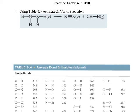This is a practice exercise from page 318 in the textbook. We're looking at calculating an enthalpy for a reaction from bond enthalpies. The equation you want to remember is that the enthalpy of the reaction is going to be equal to the sum of the enthalpies of the bonds broken minus the sum of the enthalpies of the bonds formed.